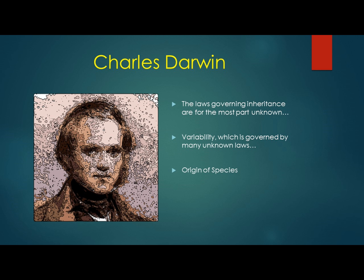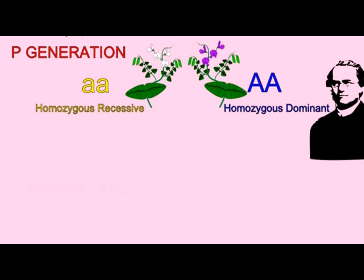Charles Darwin, in The Origin of Species, lamented that the laws governing inheritance were for the most part unknown, referred to variability which was governed by many unknown laws. That was one of the great flaws of his work at the time. He could not understand heredity.